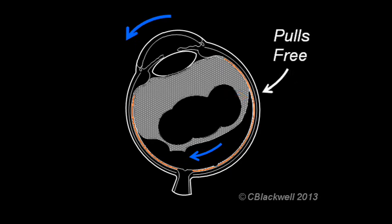Most of the time, the vitreous eventually pulls free from the retina with no problem except a new floater. But sometimes it is attached strongly enough so that when it pulls, it creates a retinal tear.